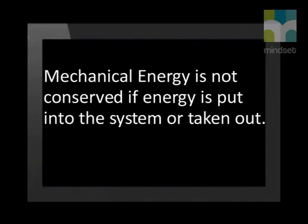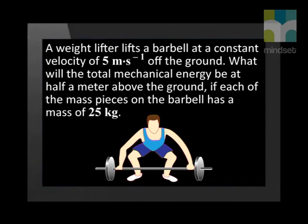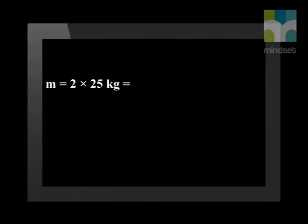Let's do an example on mechanical energy, where a weightlifter puts a lot of energy into the system. A weightlifter lifts a barbell off the ground at a constant velocity of 5 meters per second. What will the total mechanical energy be at half a meter above the ground, if each of the mass pieces on the barbell has a mass of 25 kilograms? Note that the weightlifter does not stop at this point — he continues to lift the barbell upwards. Since there are two mass pieces on the barbell, each with a mass of 25 kilograms, our total mass is 50 kilograms.